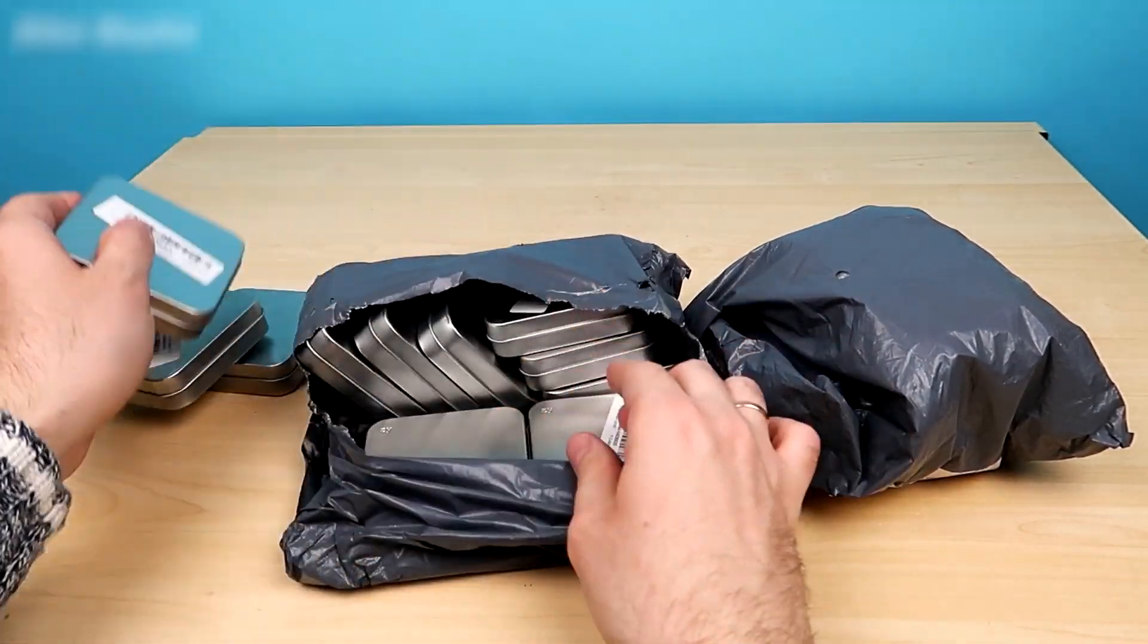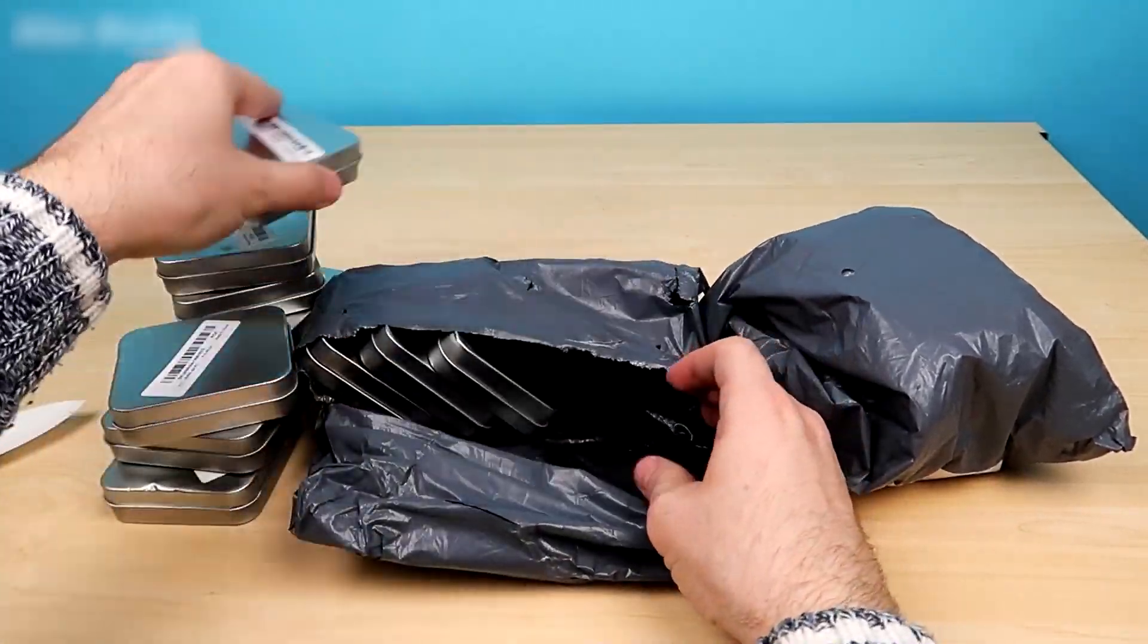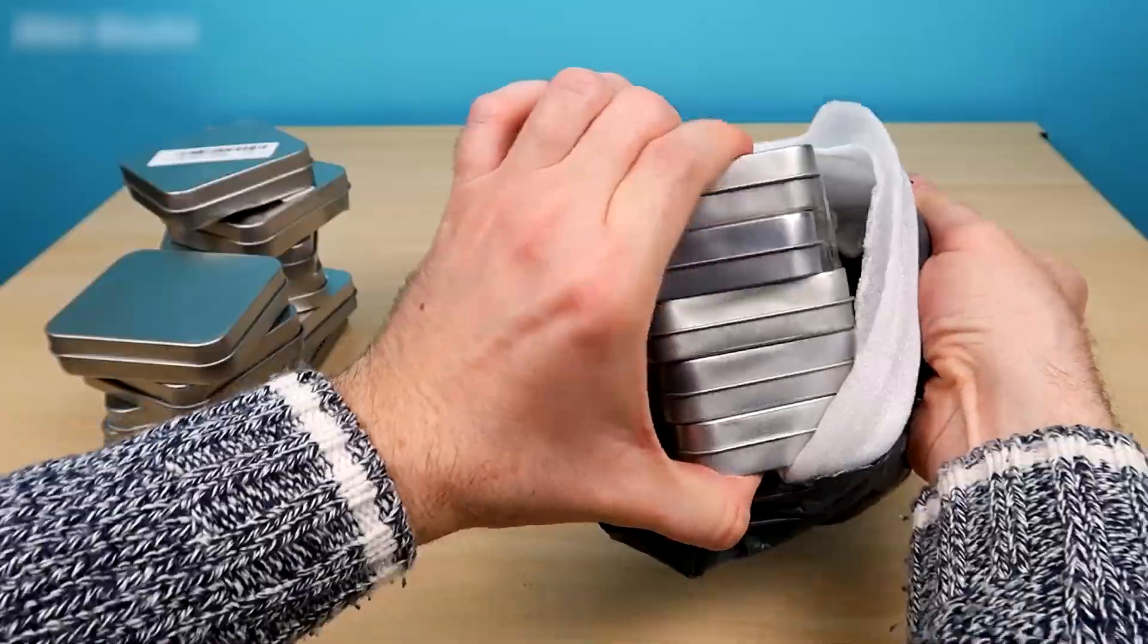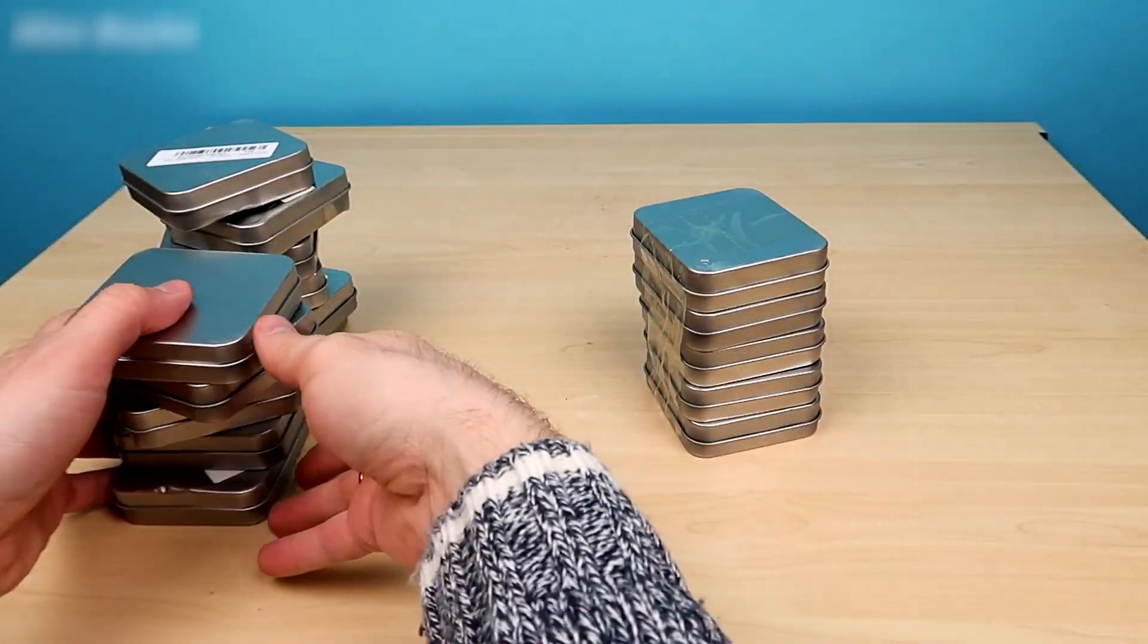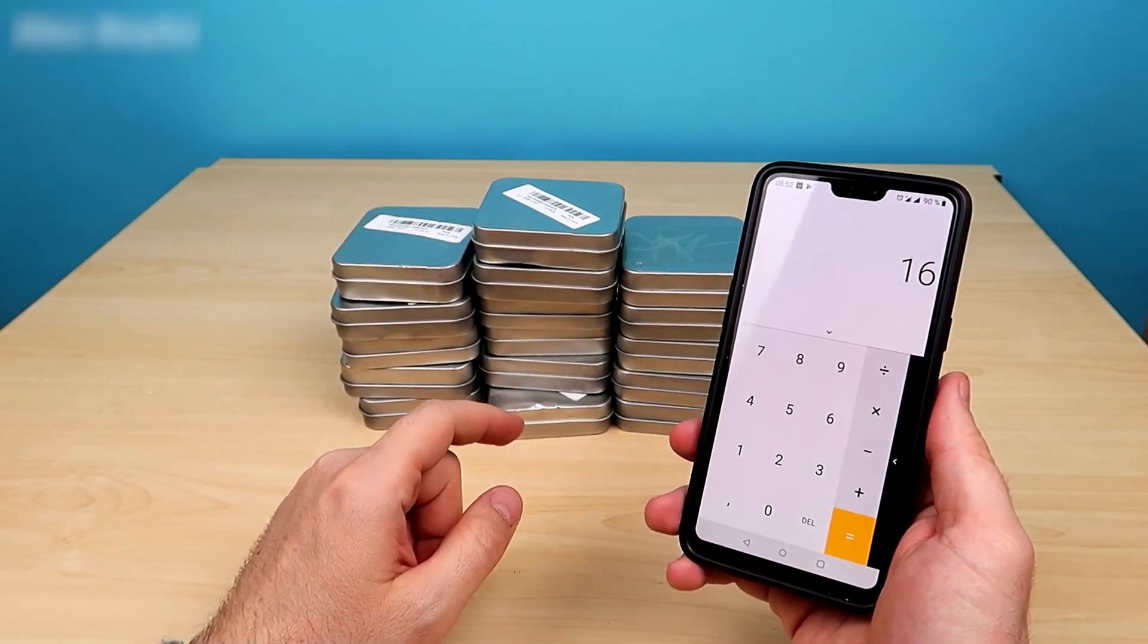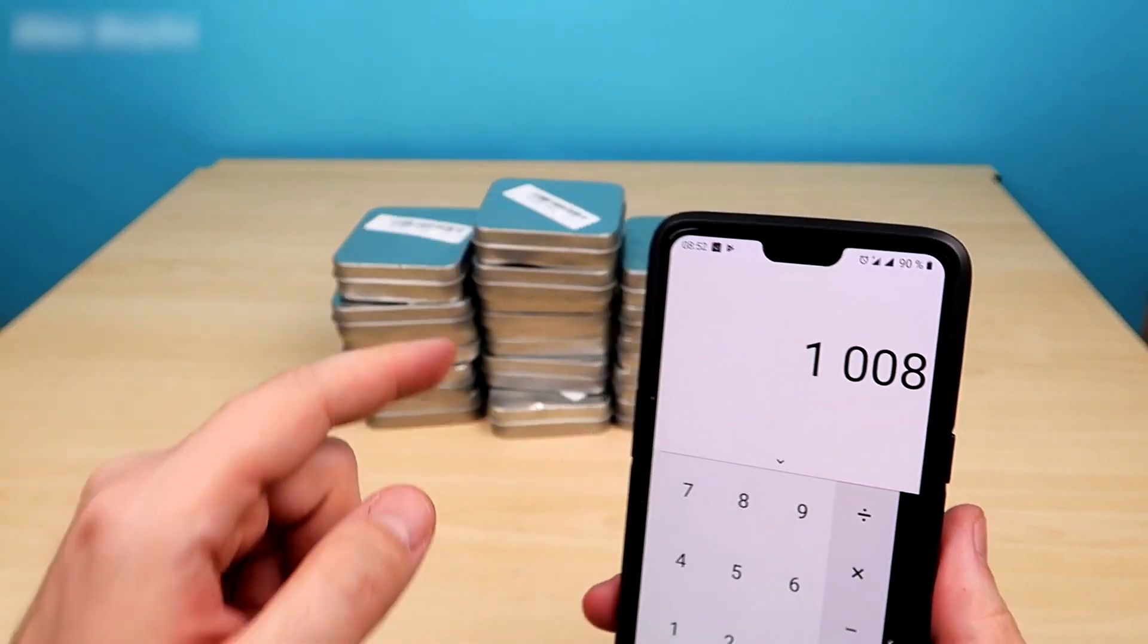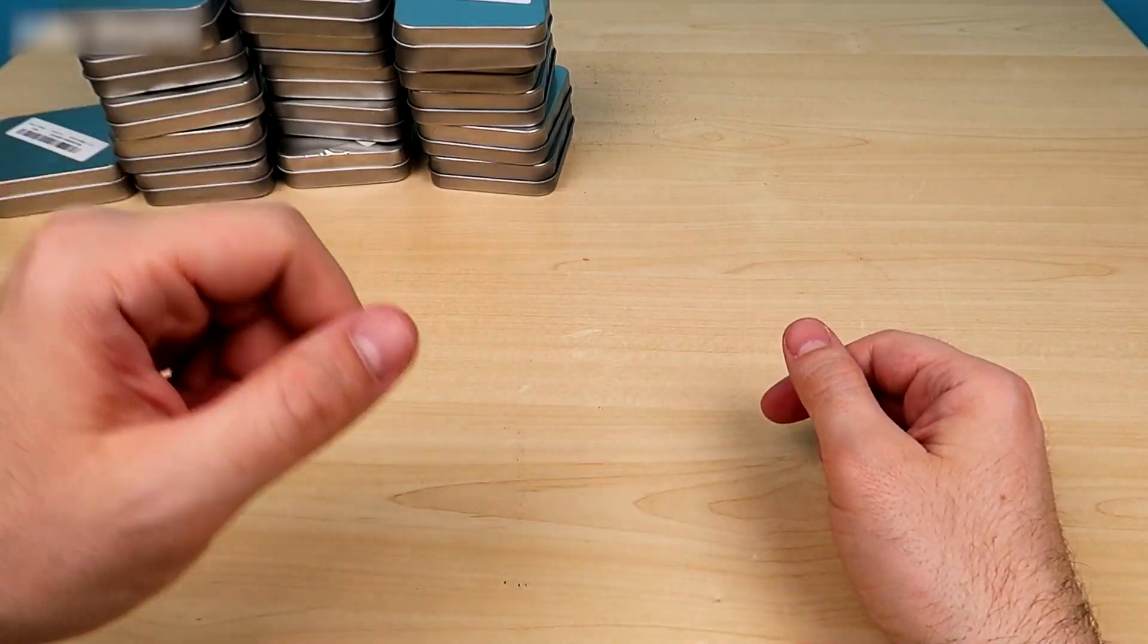Let's see how many boxes there are. 1, 2, 3, 4, 5, 6, 7, 8, 9, 10, 11. And there should be five boxes here. 1, 2, 3, 4, 5. All right. We have 15 boxes, and in each box we have 63 pieces. If we multiply that by 63, we have 1,008 pieces. Let's get started.